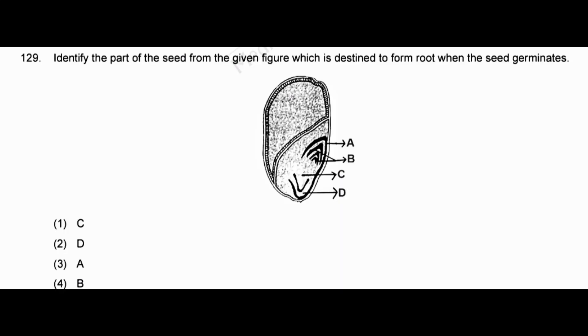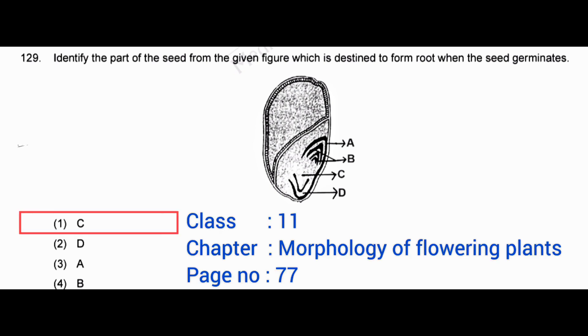The part of the seed from the given figure which is destined to form root when the seed germinates — correct answer: option 1, C.